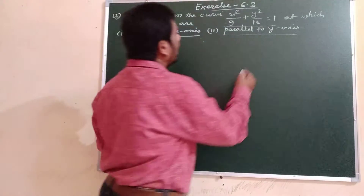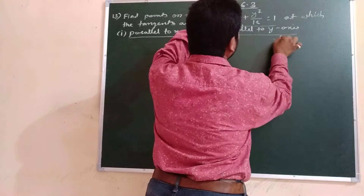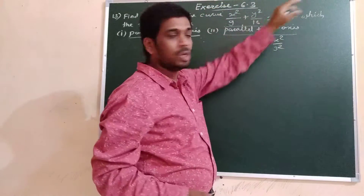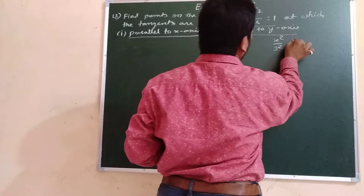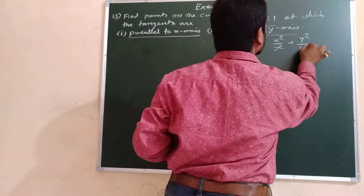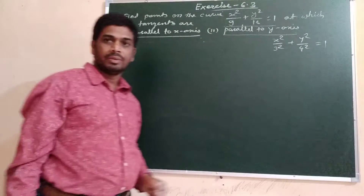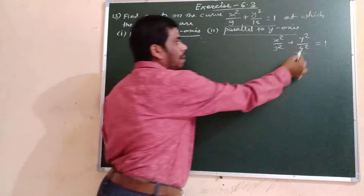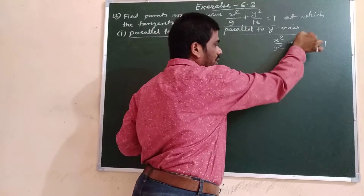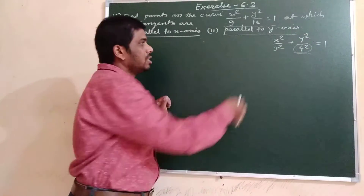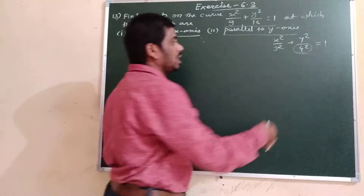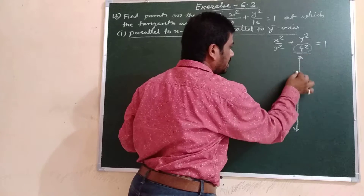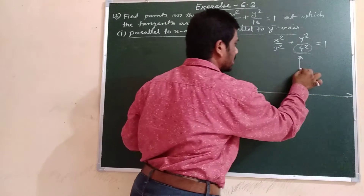You would have noticed that this equation can be written as x²/3² + y²/4² = 1. The denominator under y² is bigger than the denominator under x², which means the major axis of this ellipse is along the y-axis.